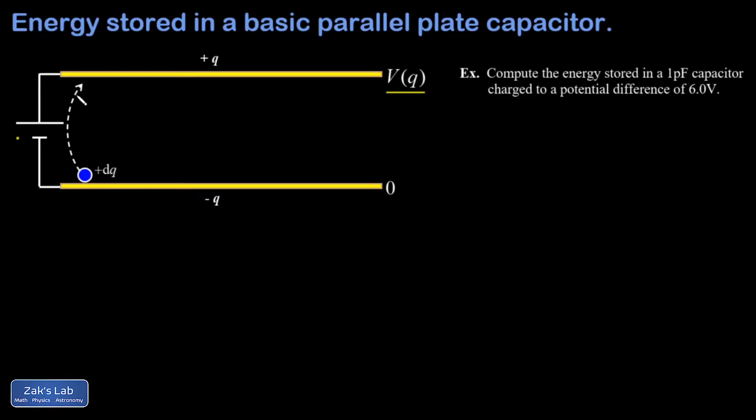Now, as this process continues, the potential energy increase of each little dq is changing in size because the potential difference between the plates is getting bigger. And that's why we require calculus to do the derivation. It's this continuously changing quantity, and I have to add up all these continuously changing quantities with an integral.